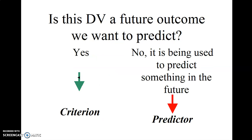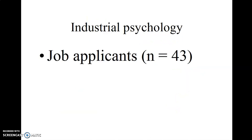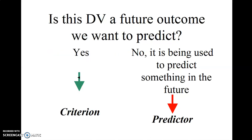Now is this dependent variable a future outcome that we want to predict? If so, this is a criterion variable. If not, then is it being used to predict something in the future? If so, it is a predictor variable.